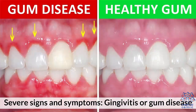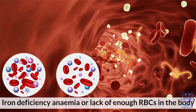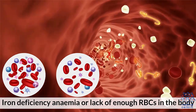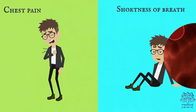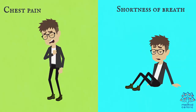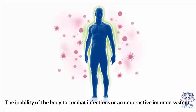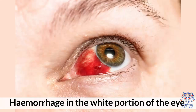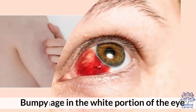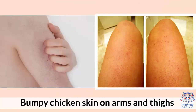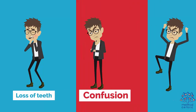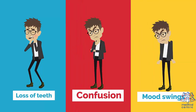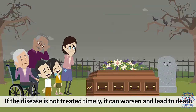Severe signs and symptoms include: gingivitis or gum disease; iron deficiency anemia, or lack of enough red blood cells in the body; chest pain; shortness of breath; the inability of the body to combat infections or an underactive immune system; hemorrhage or bleeding under the skin; hemorrhage in the white portion of the eye; bumpy chicken skin on arms and thighs; loss of teeth; confusion; and mood swings. If the disease is not treated timely, it can worsen and lead to death.